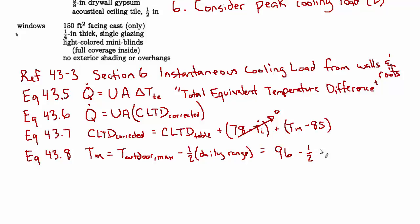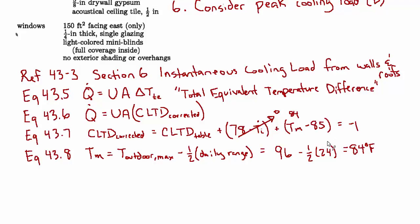The outdoor design temperature is 96°F and we subtract half the daily range of 24, so we subtract 12, giving a mean temperature of 84°F. Plugging that in, the correction becomes 84 minus 85, which is minus one. So the correction would be to take the table value and subtract one. For simplicity in this problem, I'm not doing the table lookup, so I won't show that correction — I'll take the cooling load temperature difference values from the answer solution and apply them directly.